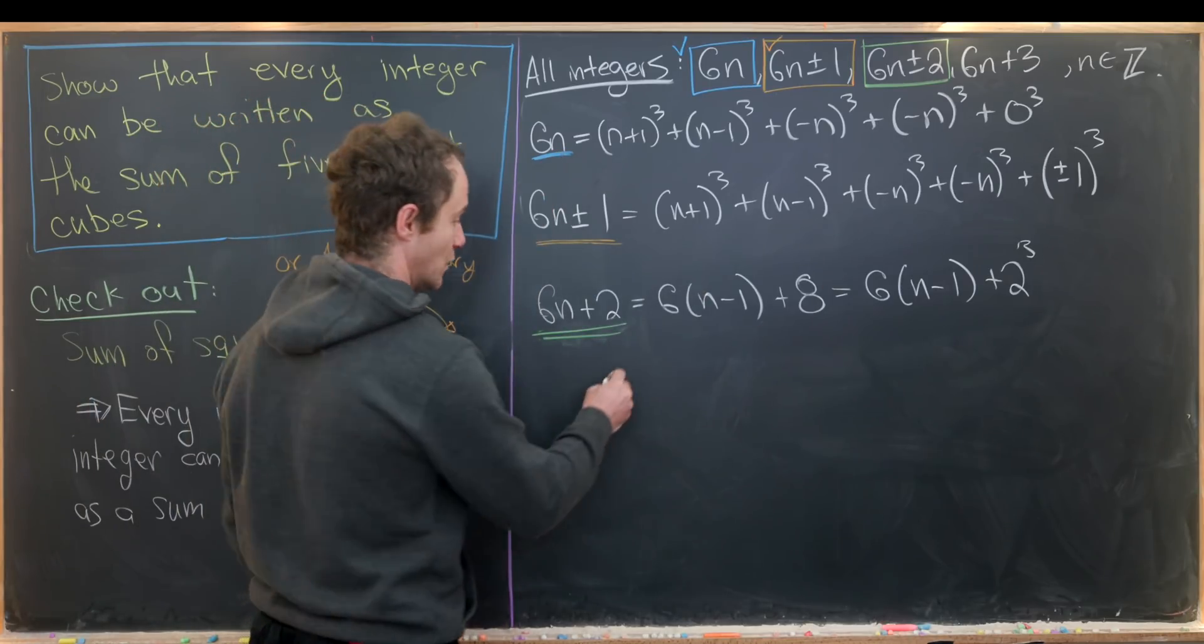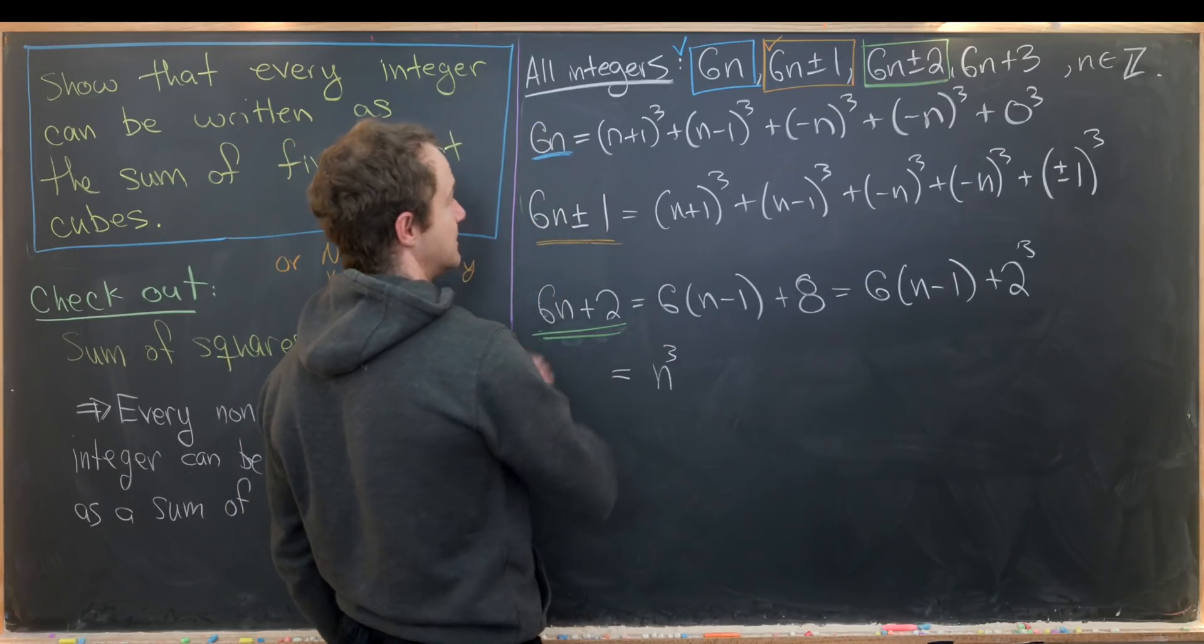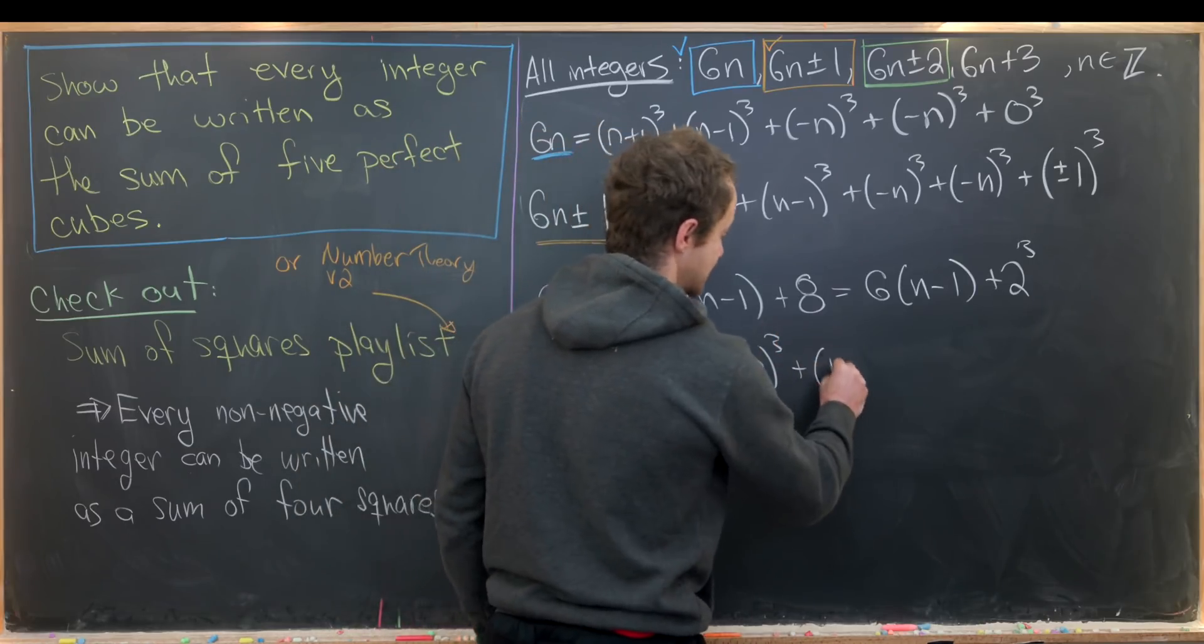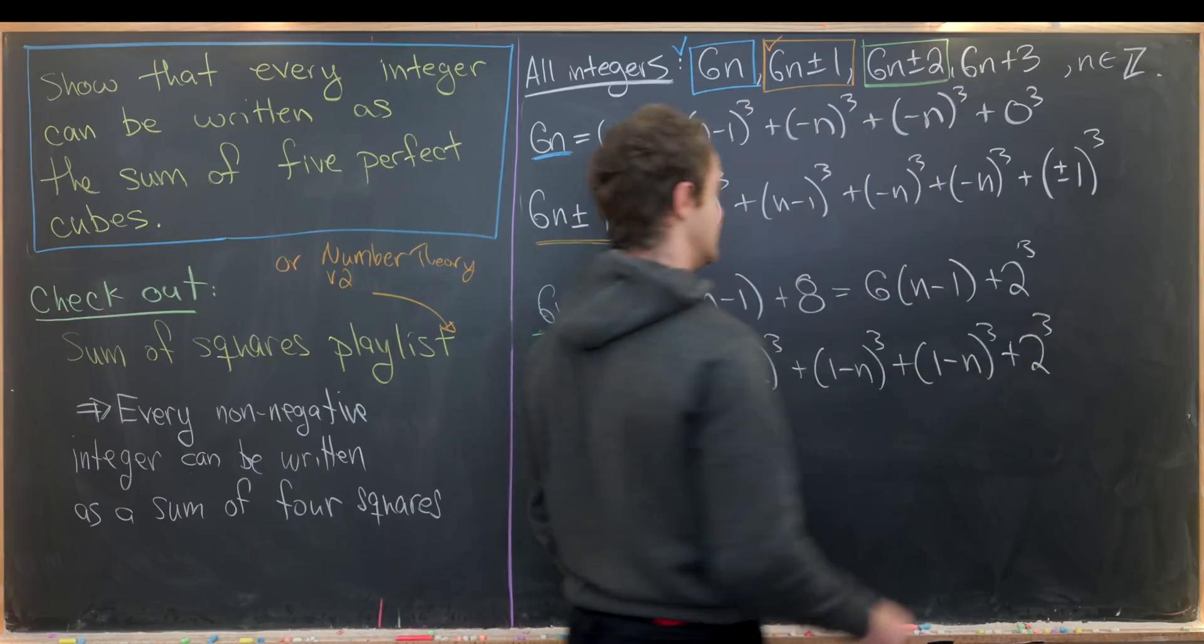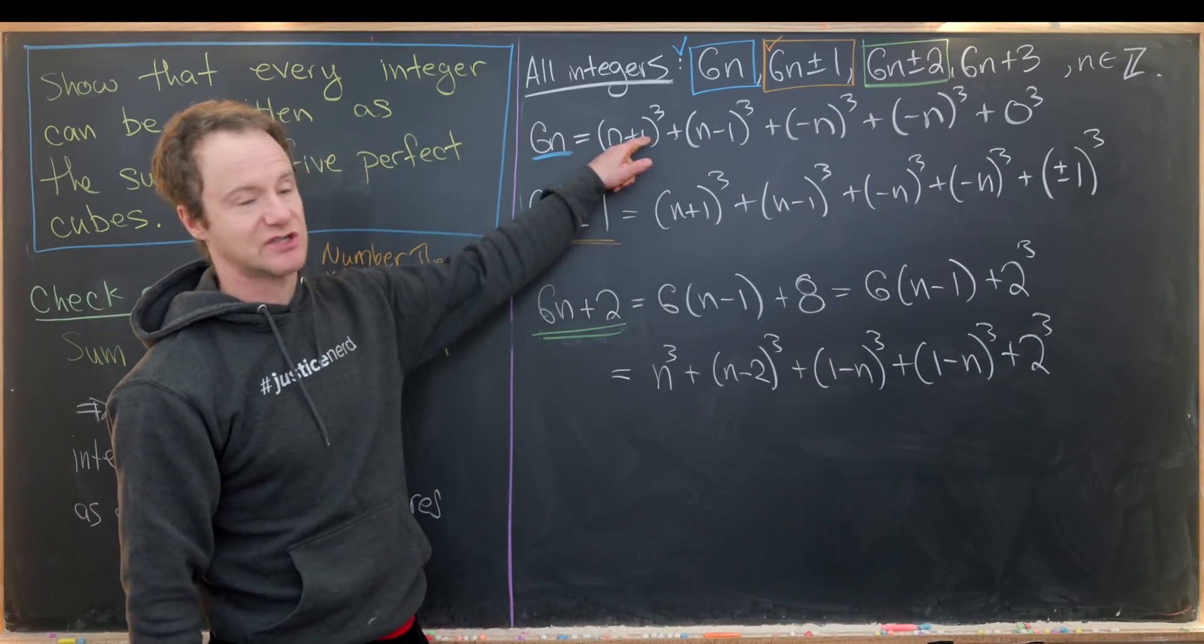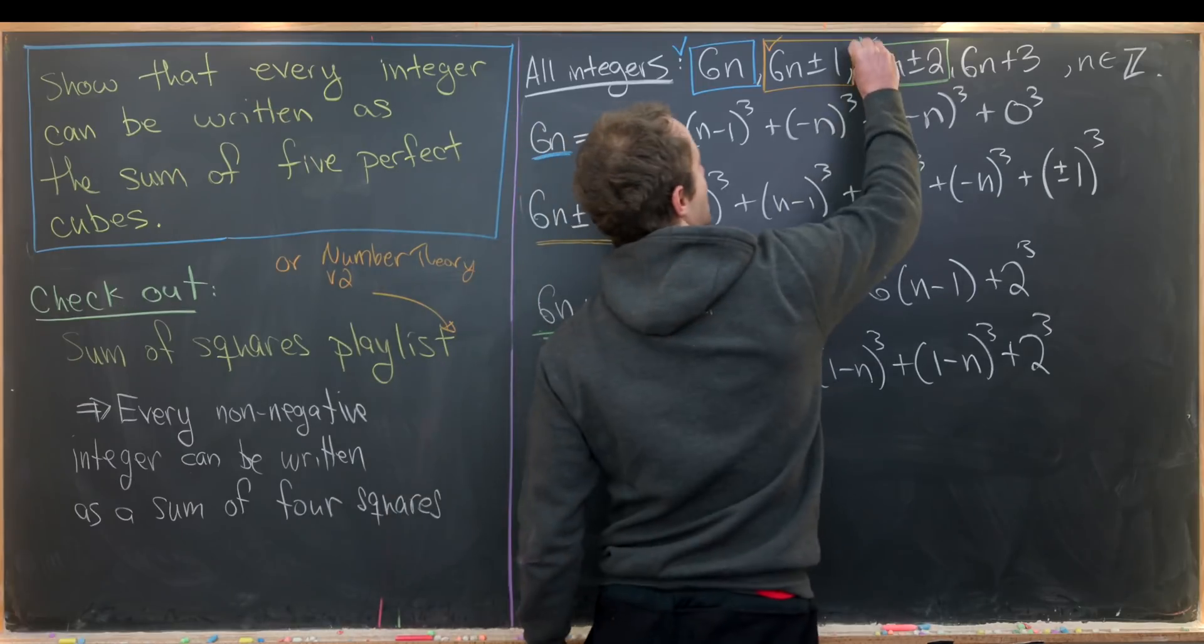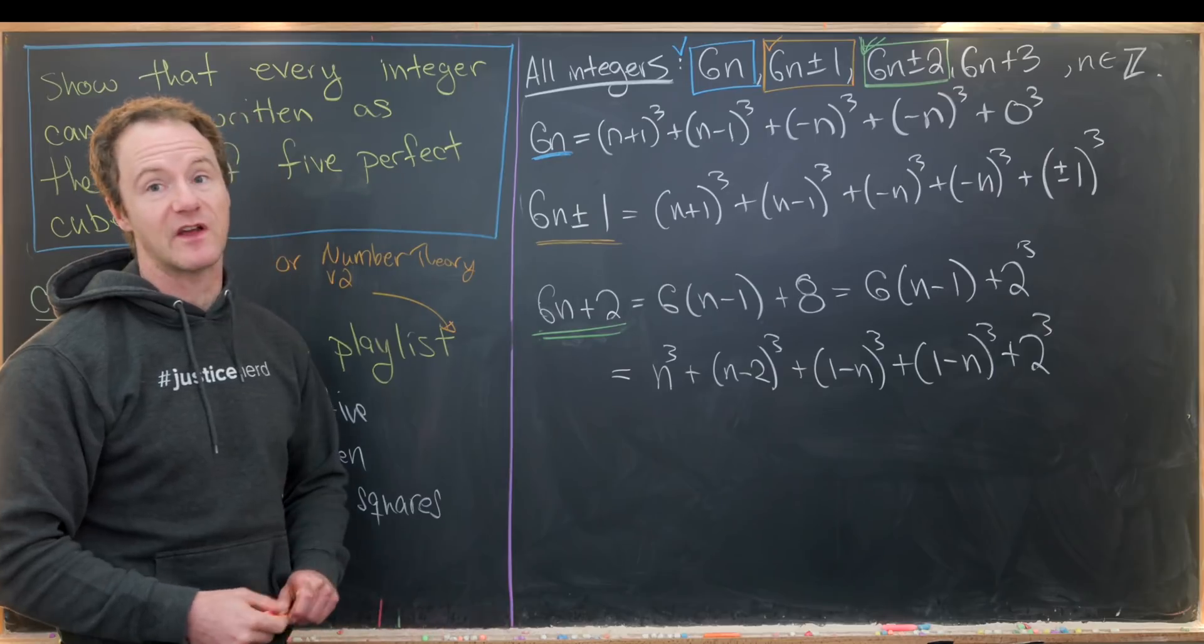Now we can expand this 6(n-1) using our 6n expansion where the role of n is being played by n-1. So that'll give us something like this: n³ + (n-2)³ + (1-n)³ + (1-n)³ + 2³. There we have it. We're guaranteed for this to work because it's just a substitution of what we had up here. But that being said you could multiply it out and check. So I'll put a check mark here. Maybe check the 6n-2 case on your own, but it'll work very similarly.